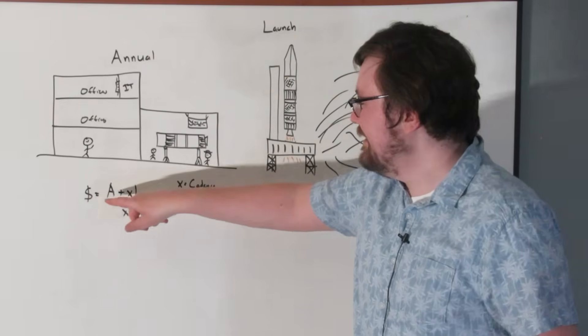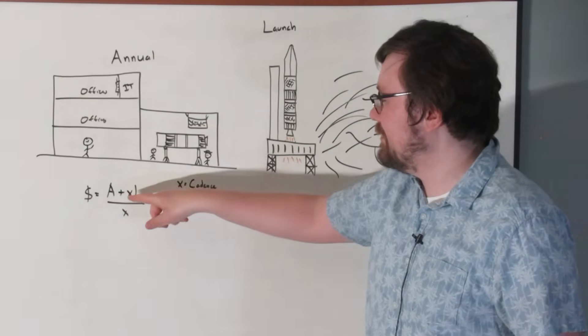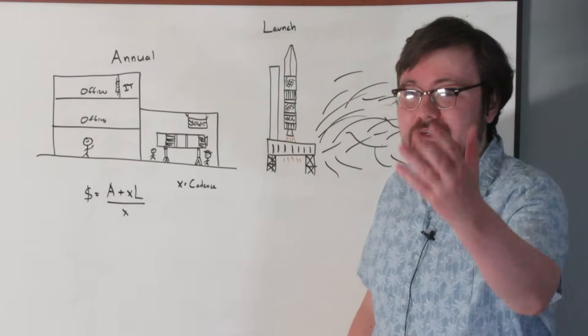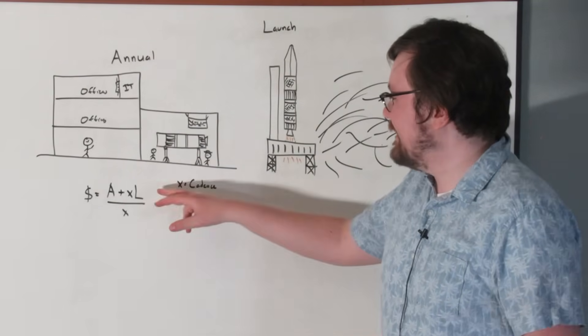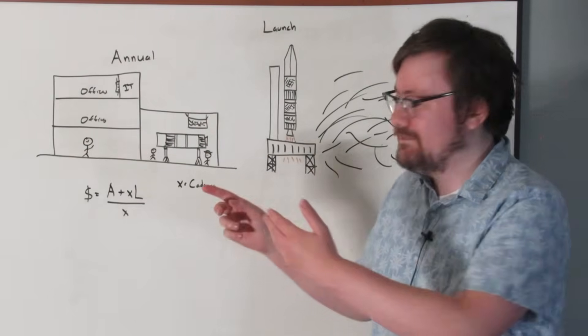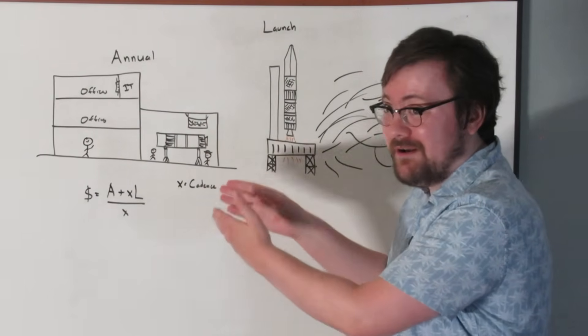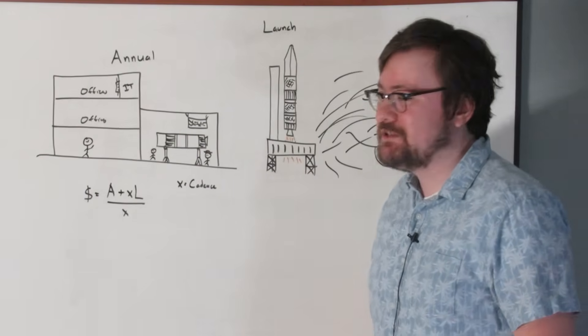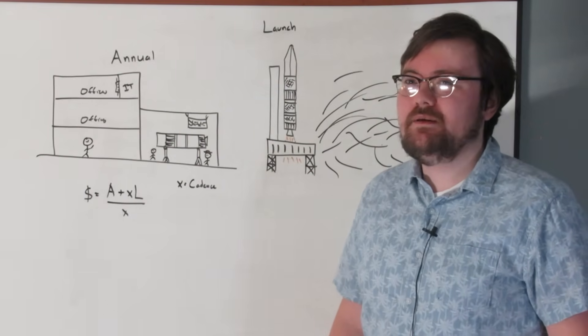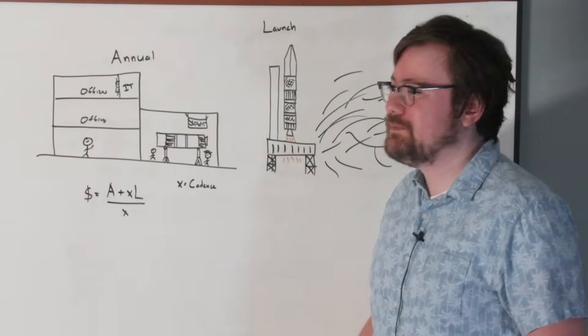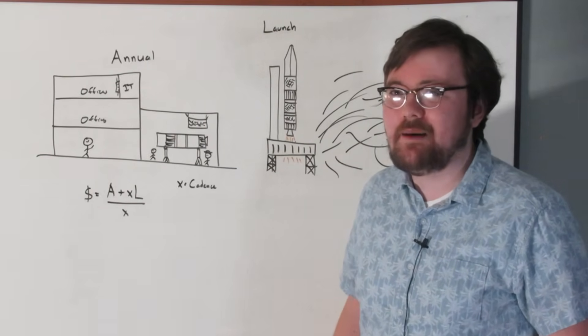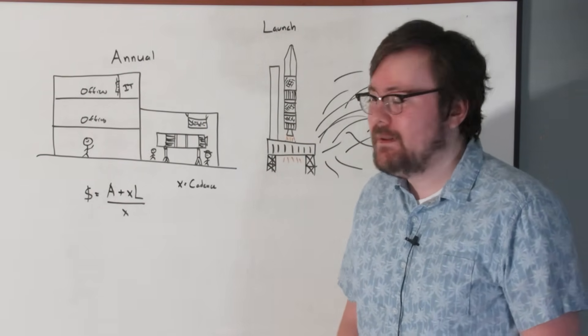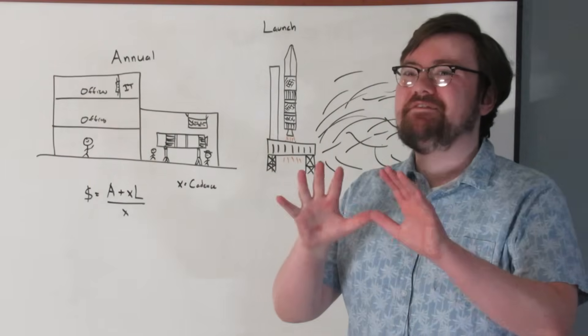All these people need to work in an office setting and a factory that costs money, and that will cost money no matter what you do. These are annual costs. If you don't launch, you're still spending this money. Pretty simple, right? It's not, but we're pretending it is. So I've come up with a cute little equation to describe this. Dollars, your cost, equals your annual costs plus X, that's cadence flights per year, people love talking about that one, times your launch specific costs.